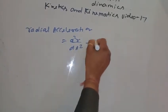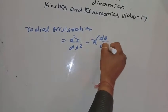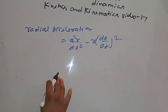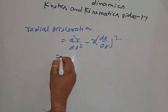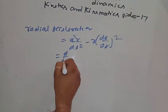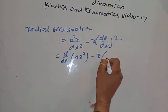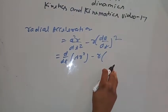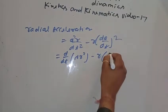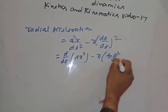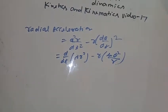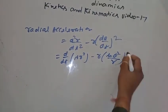Radial acceleration equals d squared r by dt squared minus r times (d theta by dt) squared. From equation one, dr/dt is lambda r squared. From equation two, d theta/dt is mu theta squared by r.